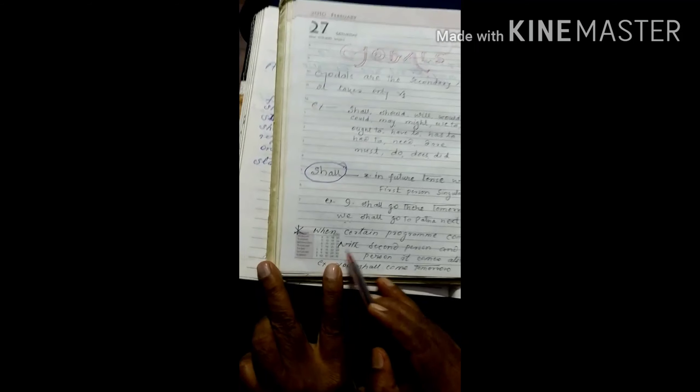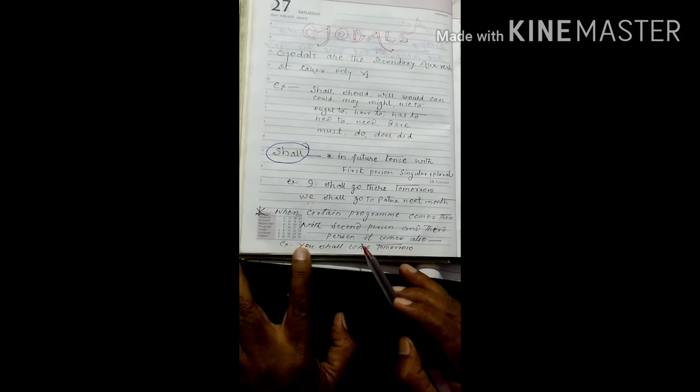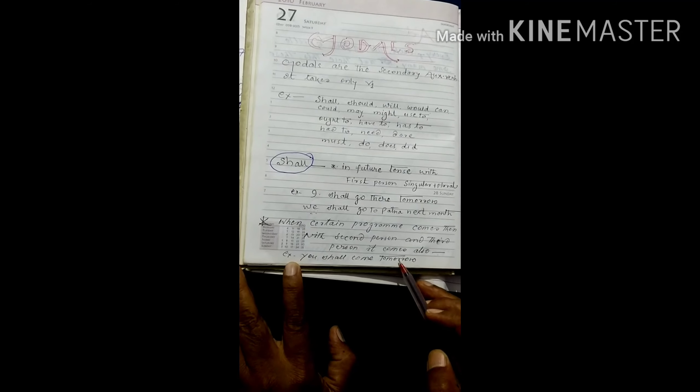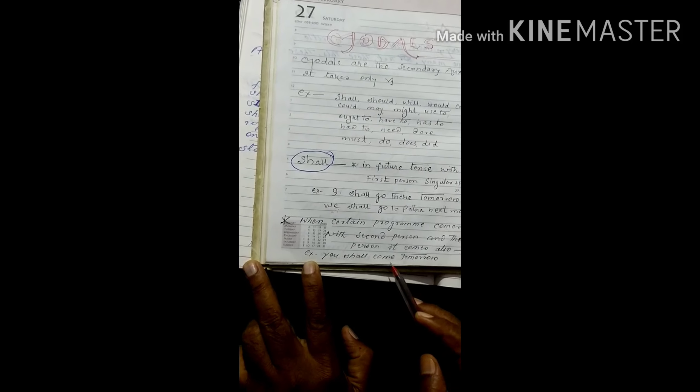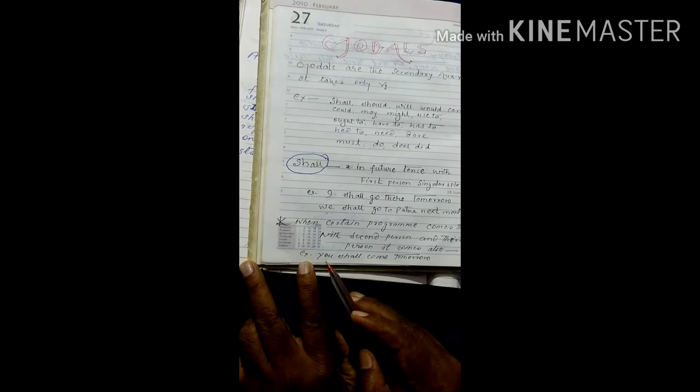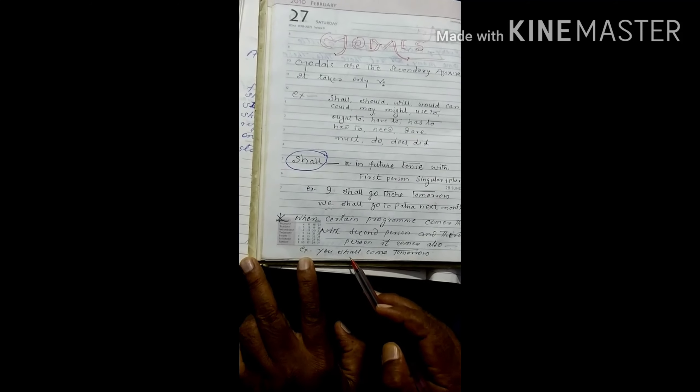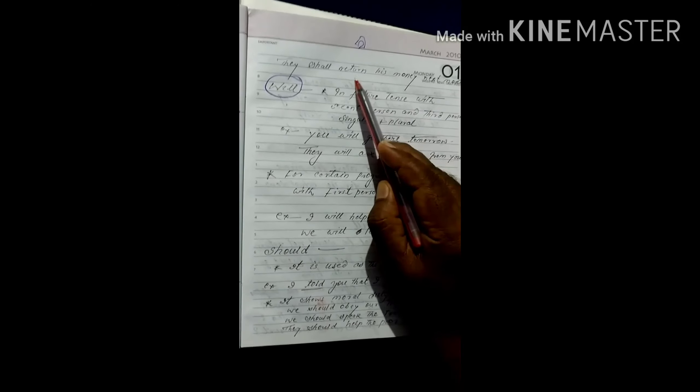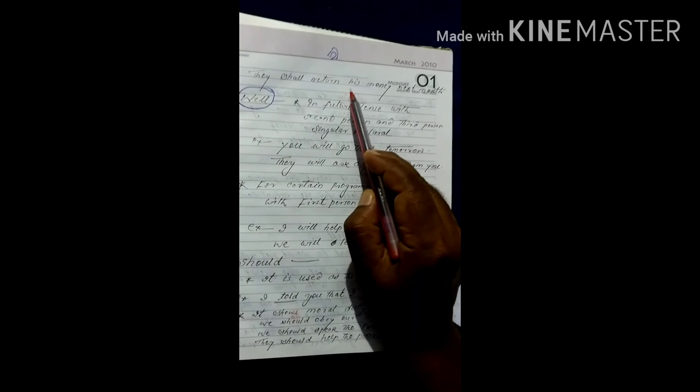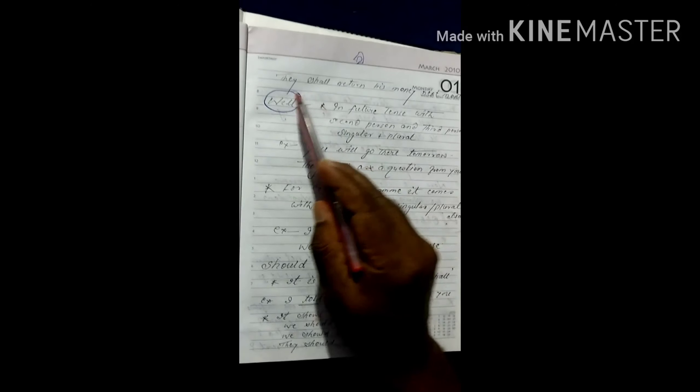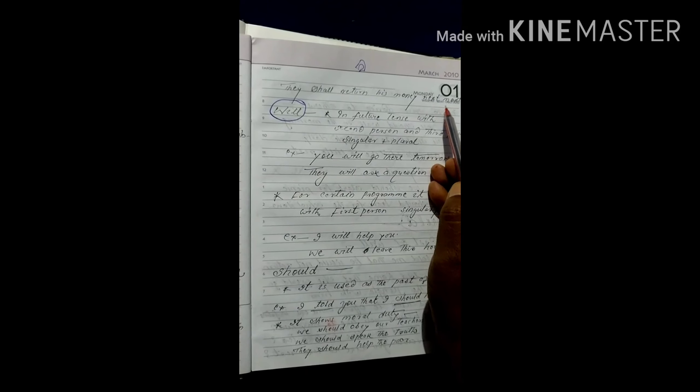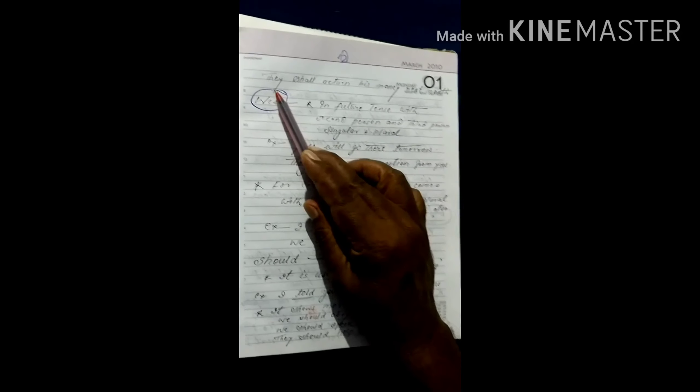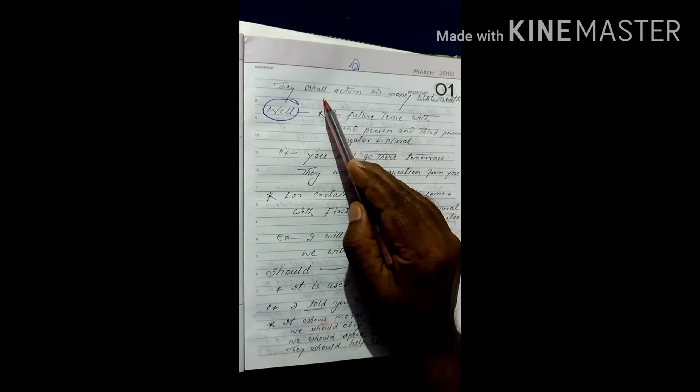Now, when certain program comes, then with second person and third person, it also comes. For example, you shall come tomorrow. This sentence shows the definite case. In spite of second person, we are using here shall, and it determines the work. Second example, they shall return his money next month. Here is also third person plural number, but we are using shall because it shows determined work. Sure work is reflected here. So, in spite of third person, we are using shall.